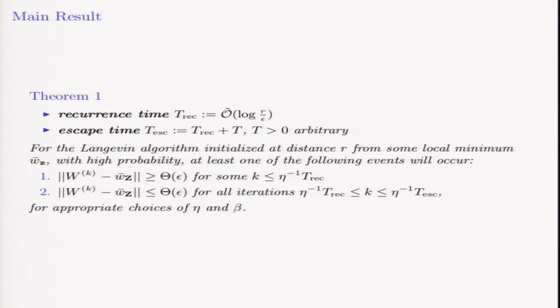Our main result is as follows. First, pick your favorite local minimum, call it W bar. Then define this recurrence time that is polynomial in everything, which is to say short, and this escape time that is arbitrarily longer than it.